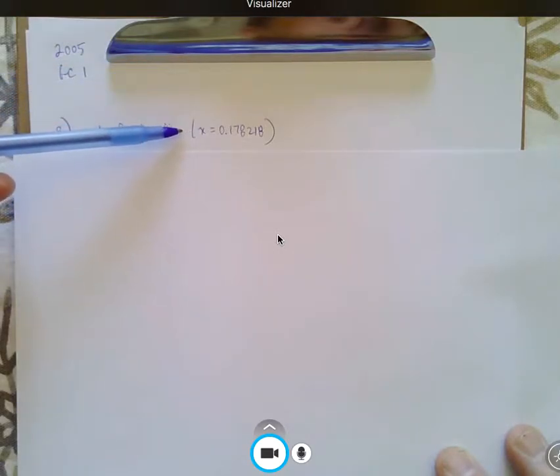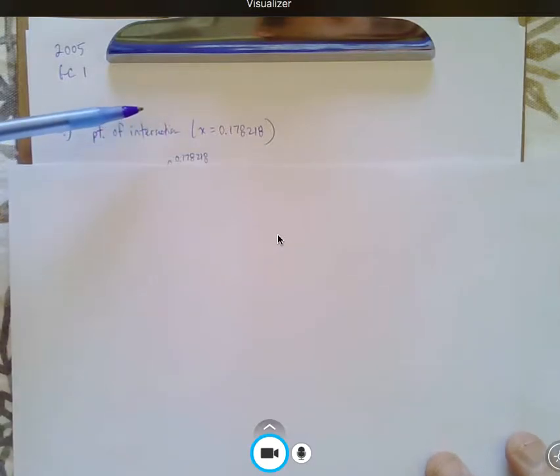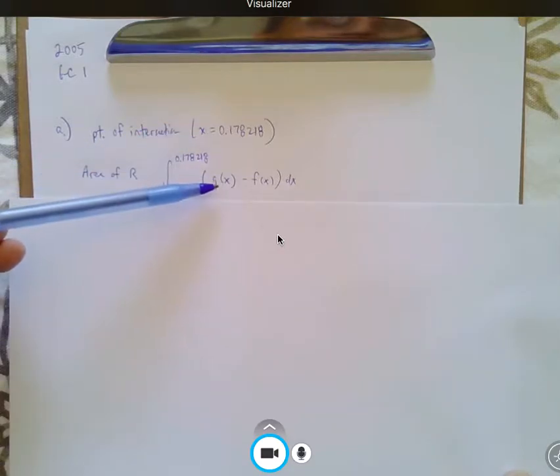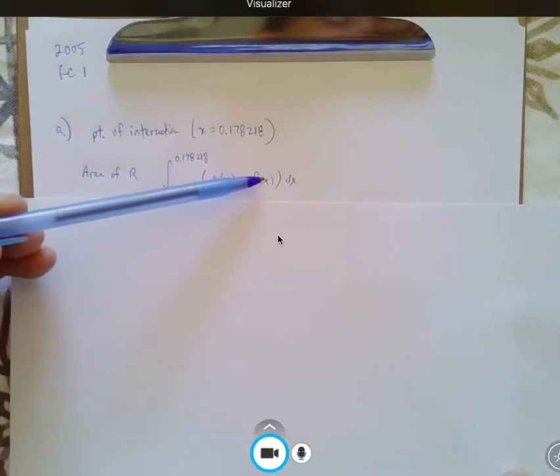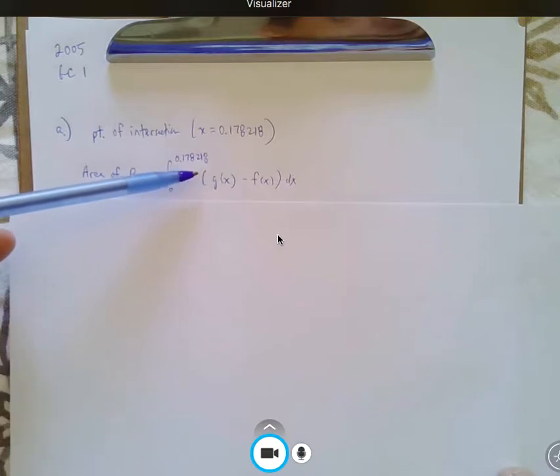Letter A, remember the point of intersection is going to be the whole calculator answer. Don't round the point of intersection, and it's whatever that irrational number is. Part A, find the area of R. It's pretty straightforward. Remember, you can write g of x minus f of x.